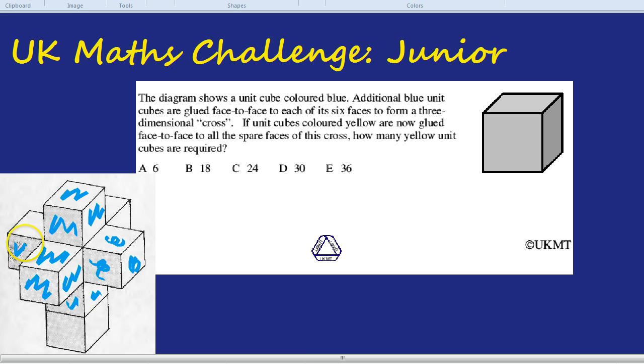But each of these blue cubes is now going to have a yellow cube on its spare faces. So for example, here's one of the yellow cubes. It's stuck on the bottom of that bottom blue cube. How many of those would we need? Again, we're going to have to really try and visualize this if this is going to work.